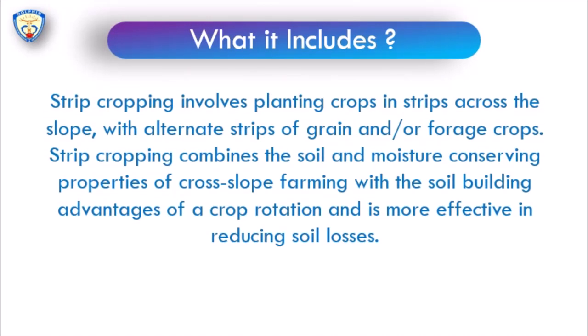Strip cropping is a part of agronomical measures of soil conservation and erosion control. It involves planting crops in strips across the slope with alternate strips of grain or forest crops. Strip cropping combines soil and moisture conserving properties. The selection of crops shown on strips must be soil conserving, erosion resisting, and moisture conserving crops.